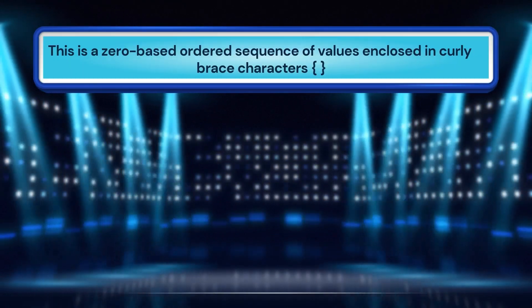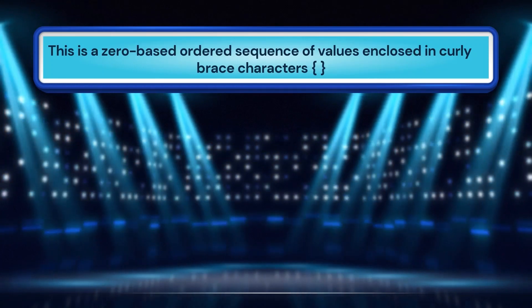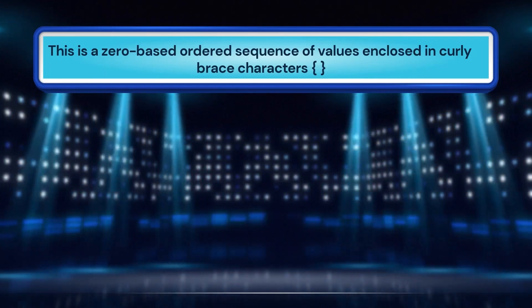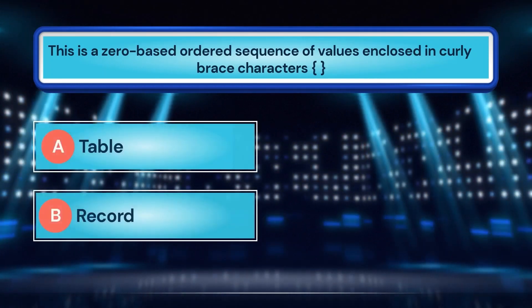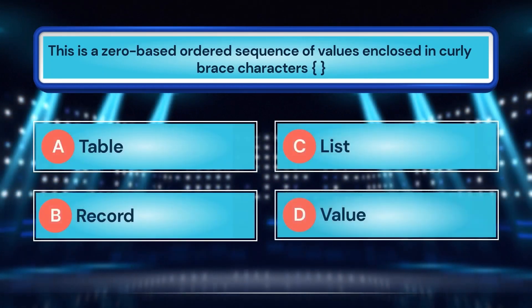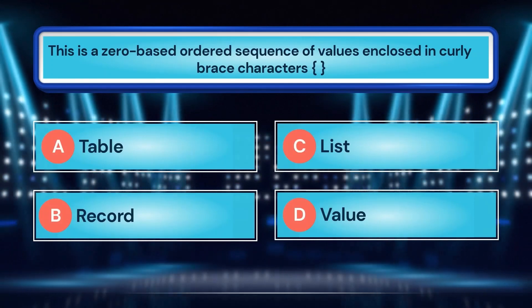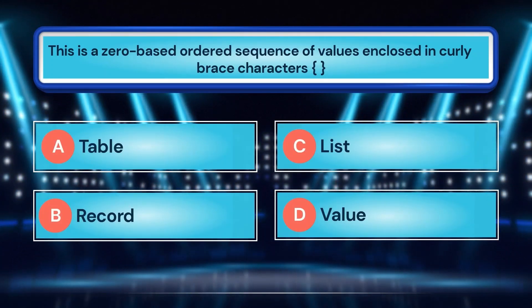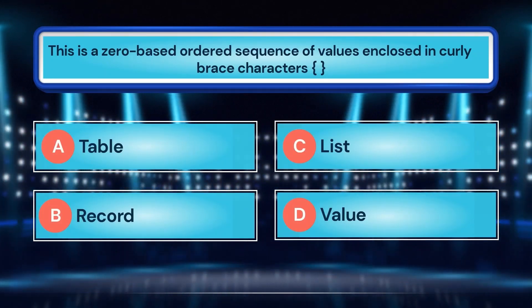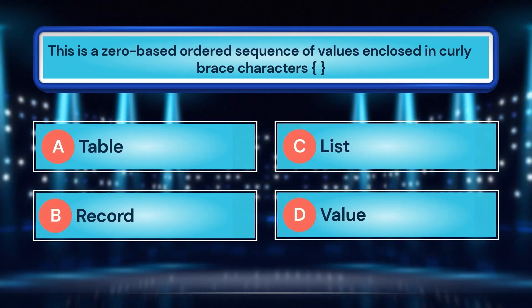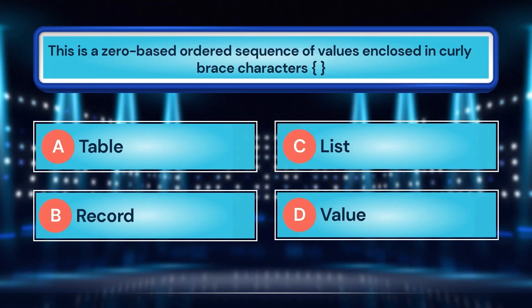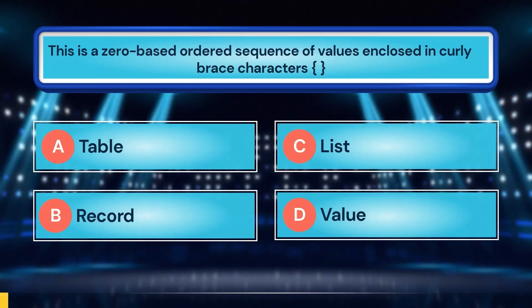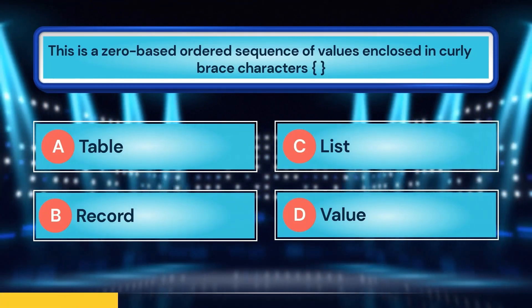This is a zero-based ordered sequence of values enclosed in curly brace characters. A. Table. B. Record. C. List. D. Value.